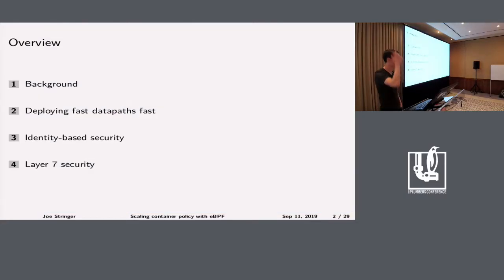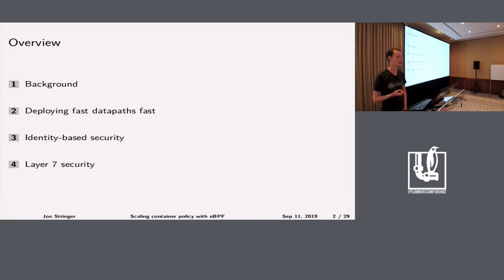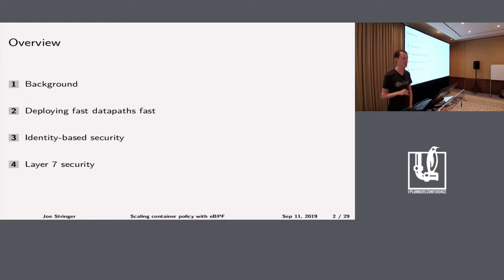First I'll start with a little bit of background and definition — what do I mean by scale, what kind of environment am I talking about? Then I want to talk about how we instantiate the BPF data plane within a node and attach that to containers to provide the networking and security. Then I'll cover identity-based security, where we apply security based on numeric integers associated with sets of labels from a container or pod, and later the nitty-gritty of L7 redirection and security.